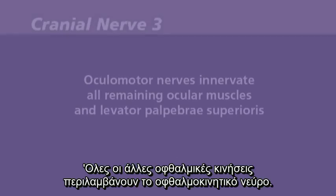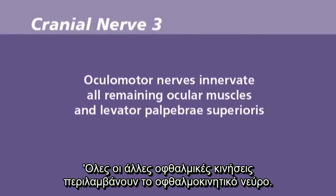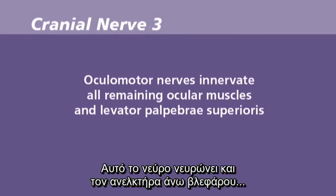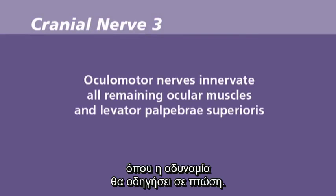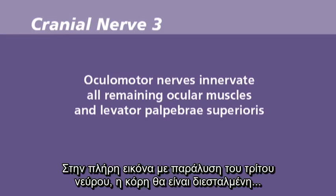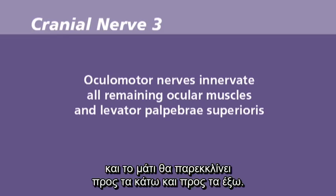All other eye movements involve the oculomotor nerve. This nerve also innervates levator palpebrae superioris, where weakness will result in ptosis. In the full picture of a third nerve palsy, the pupil will be dilated and the eye will deviate downwards and outwards.